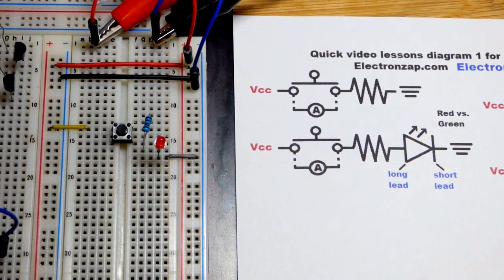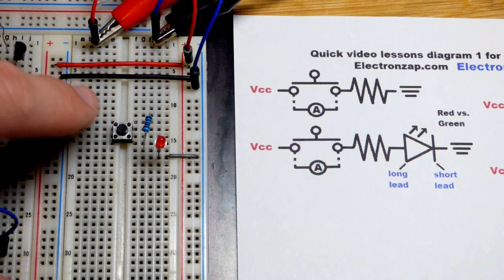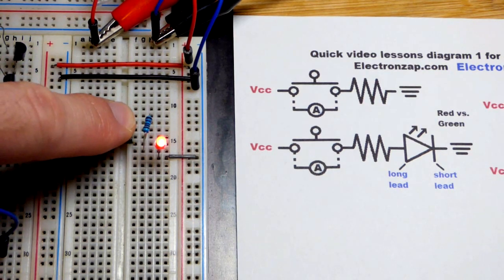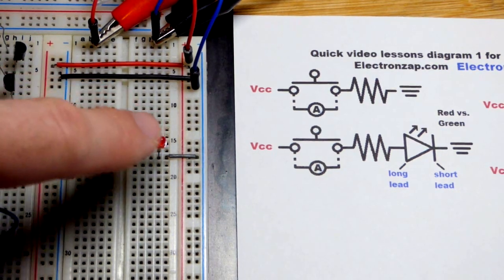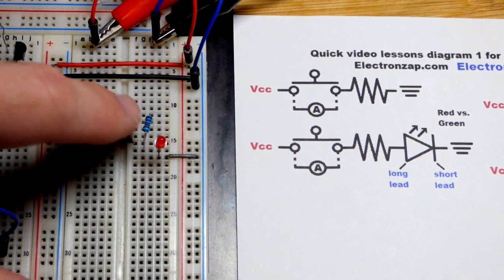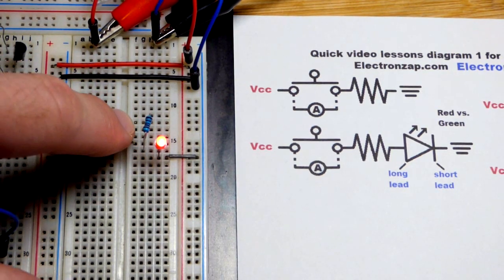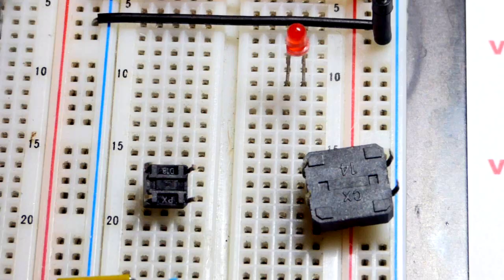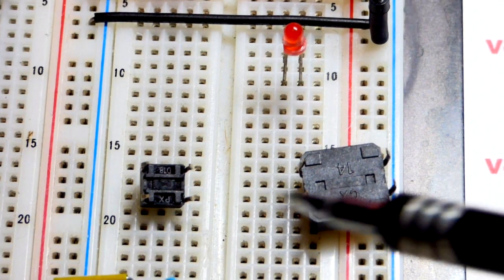This can be used as a replacement for a single pole single throw switch. You close the circuit to give enough electricity for a load to light up or whatever else you need to do, and then when you want to cut that off, you release it. Now it's very important you put these into the breadboard the right way.